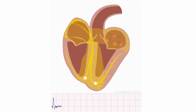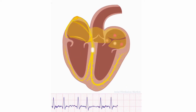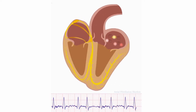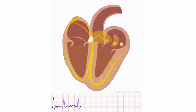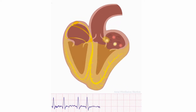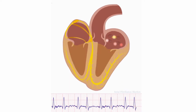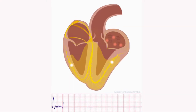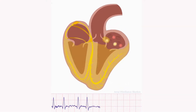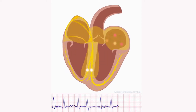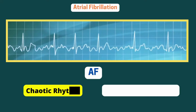During atrial fibrillation, the heart's upper chambers, the atria, beat chaotically and irregularly, out of sync with the lower chambers of the heart. It presents as an irregularly irregular rhythm, with no P waves and absence of an isoelectric baseline on ECG.